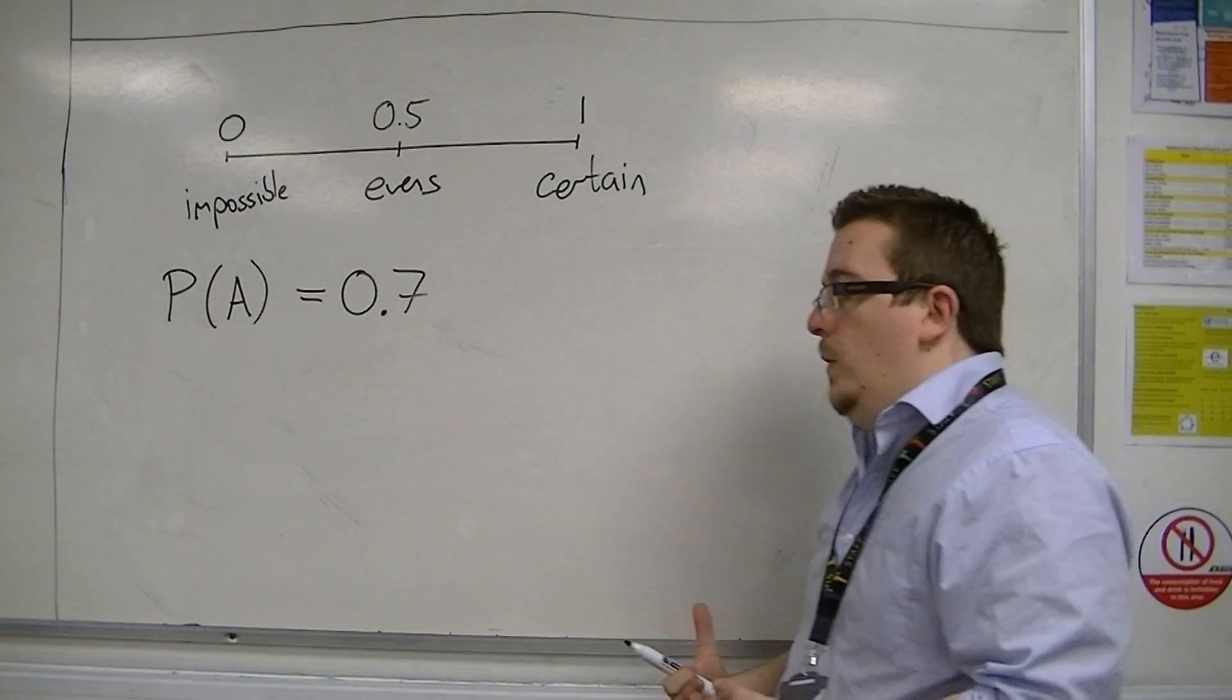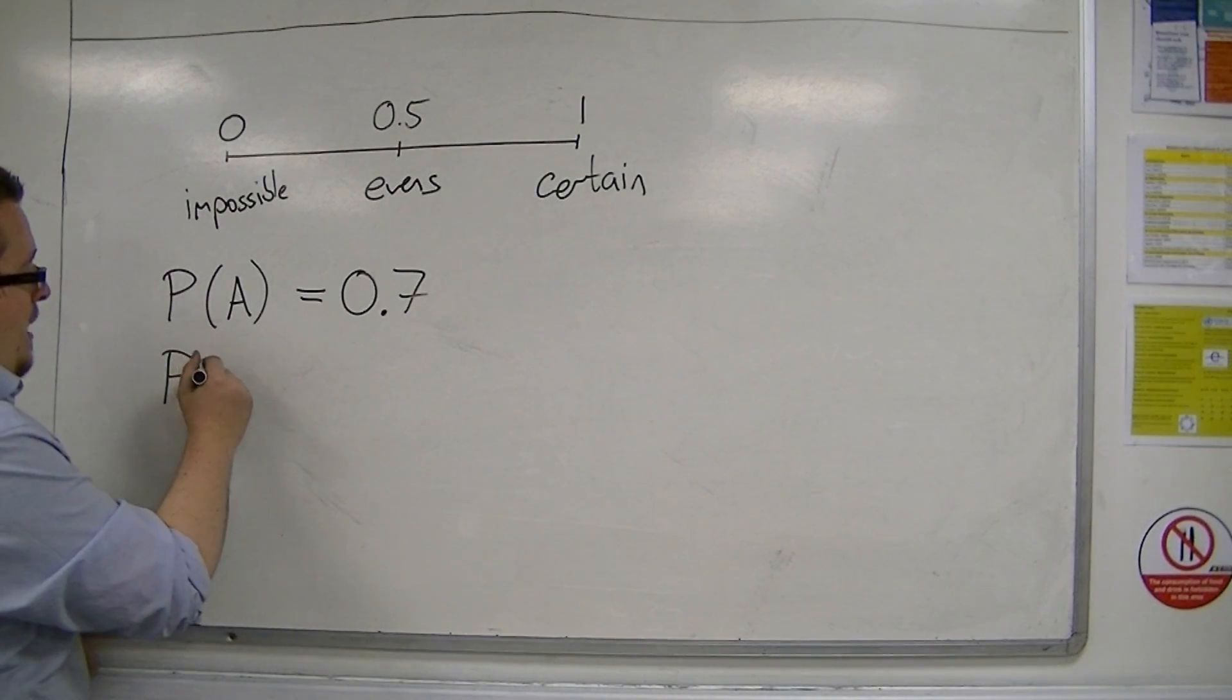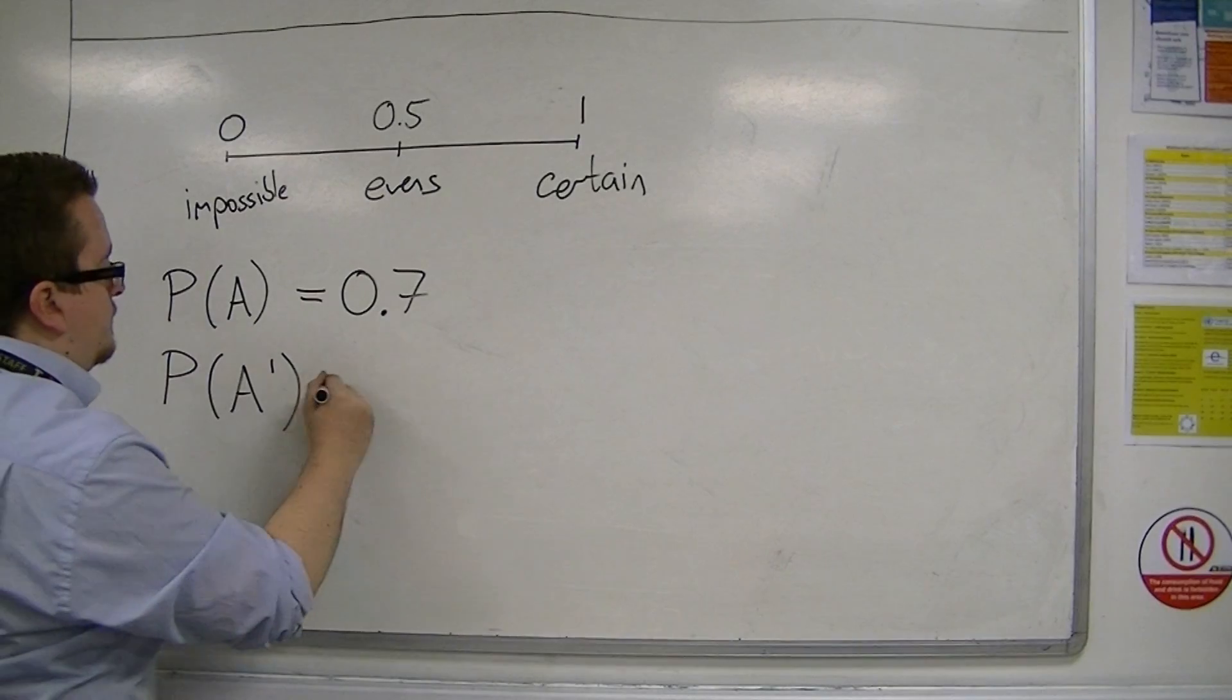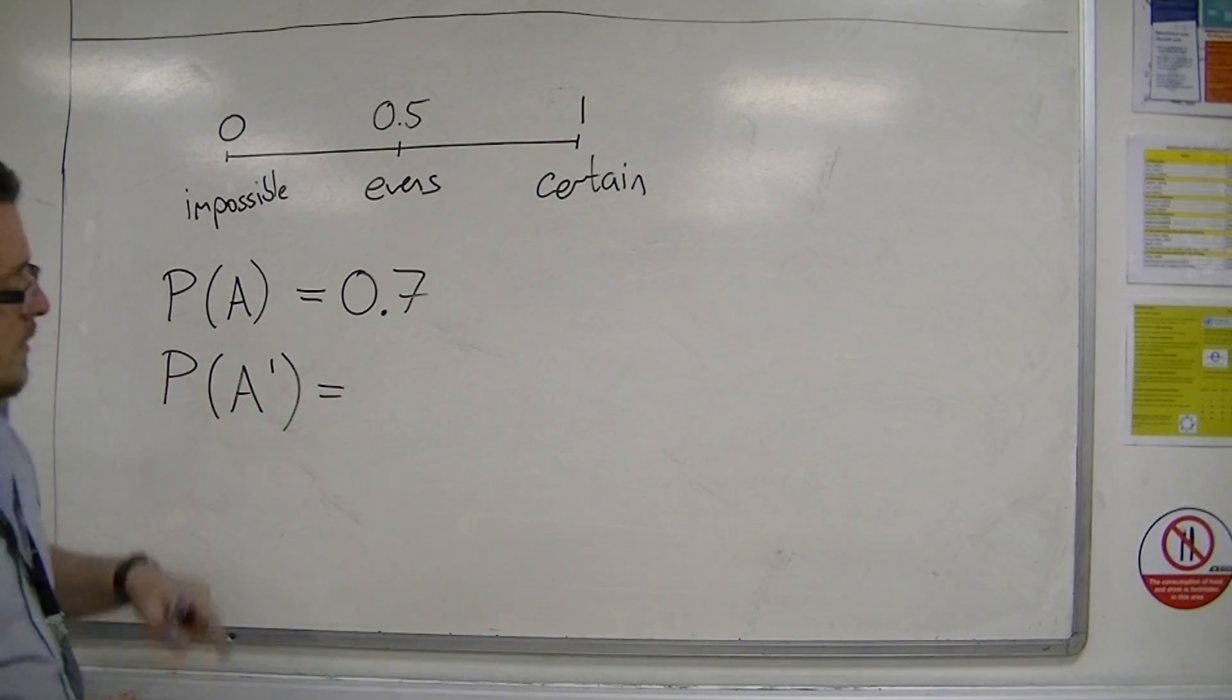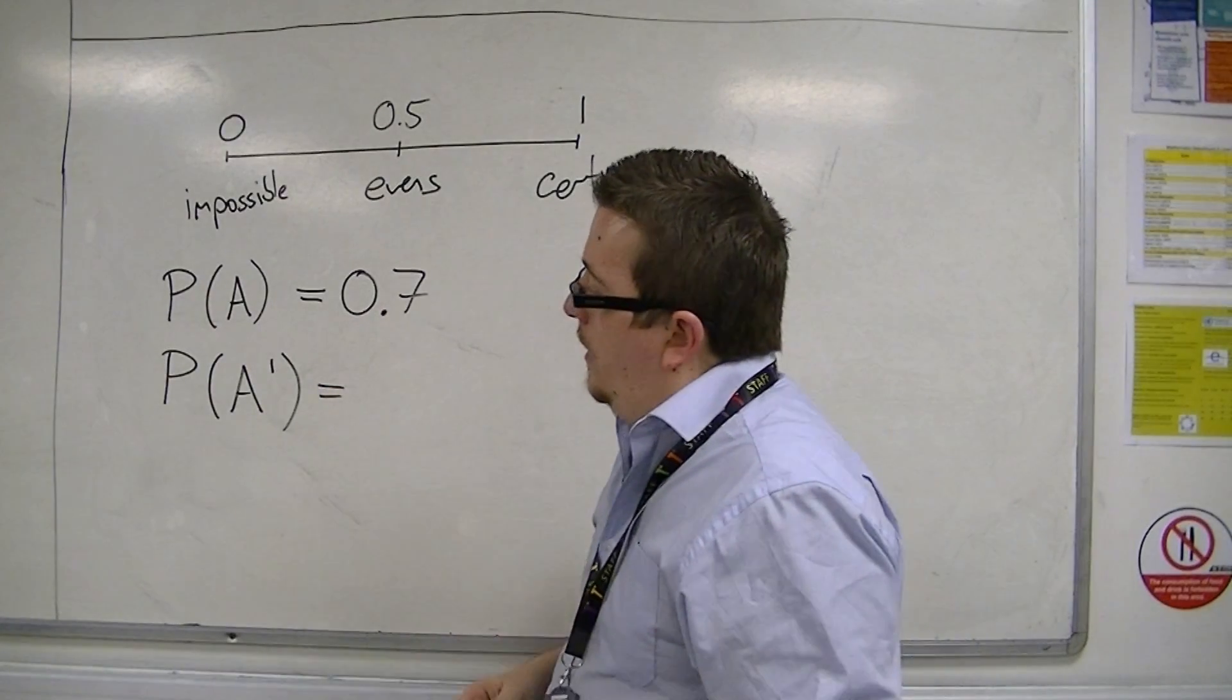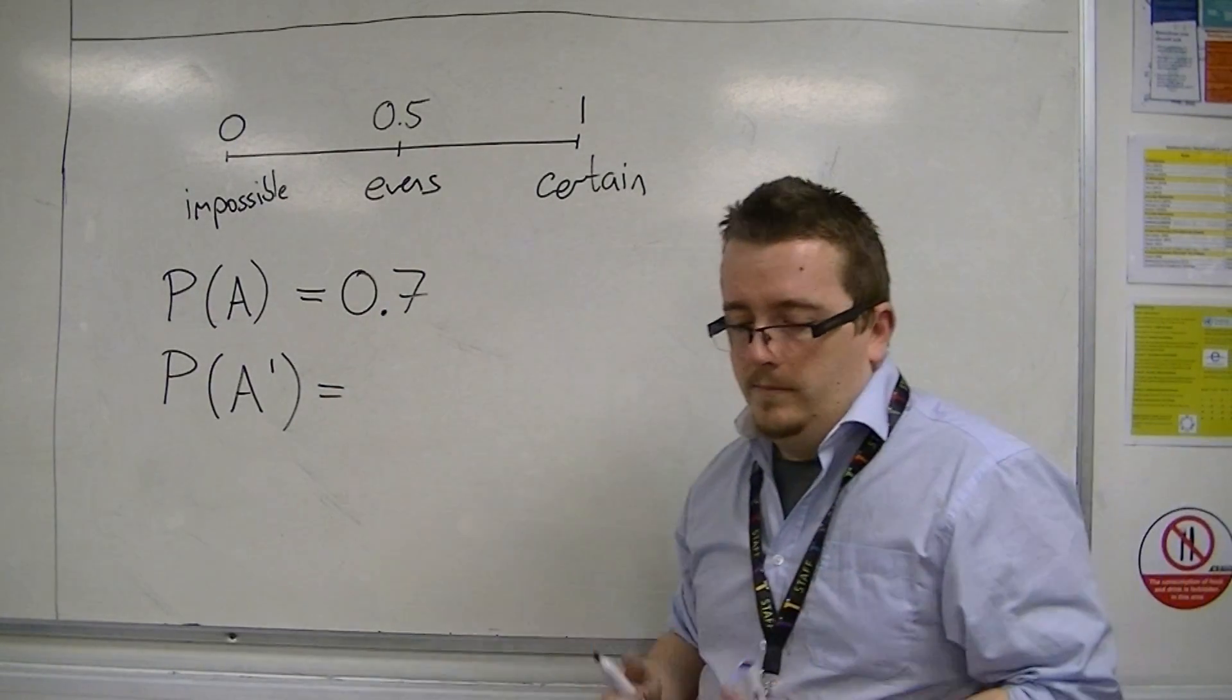If, on the other hand, you were looking at the probability of A not happening, then often is the case that we use this dash above the A to represent the probability of A not happening.